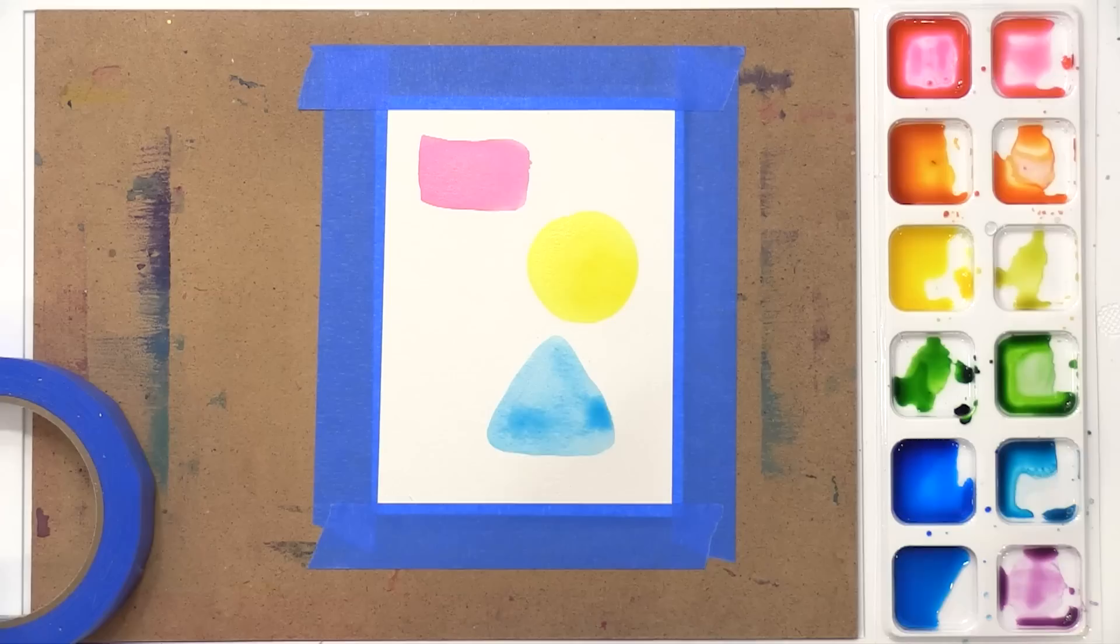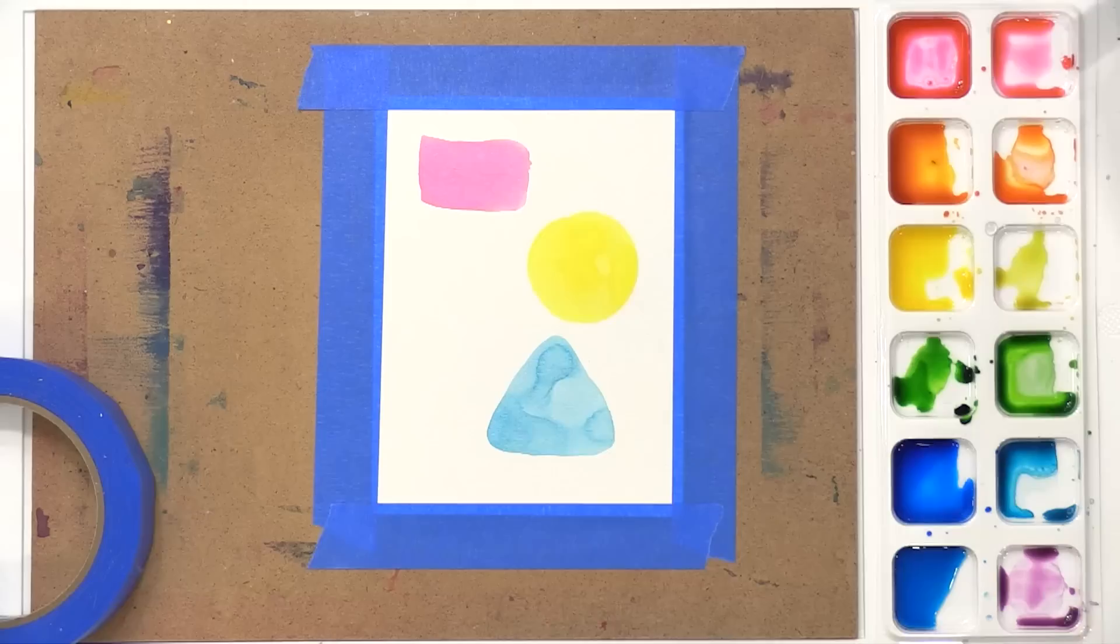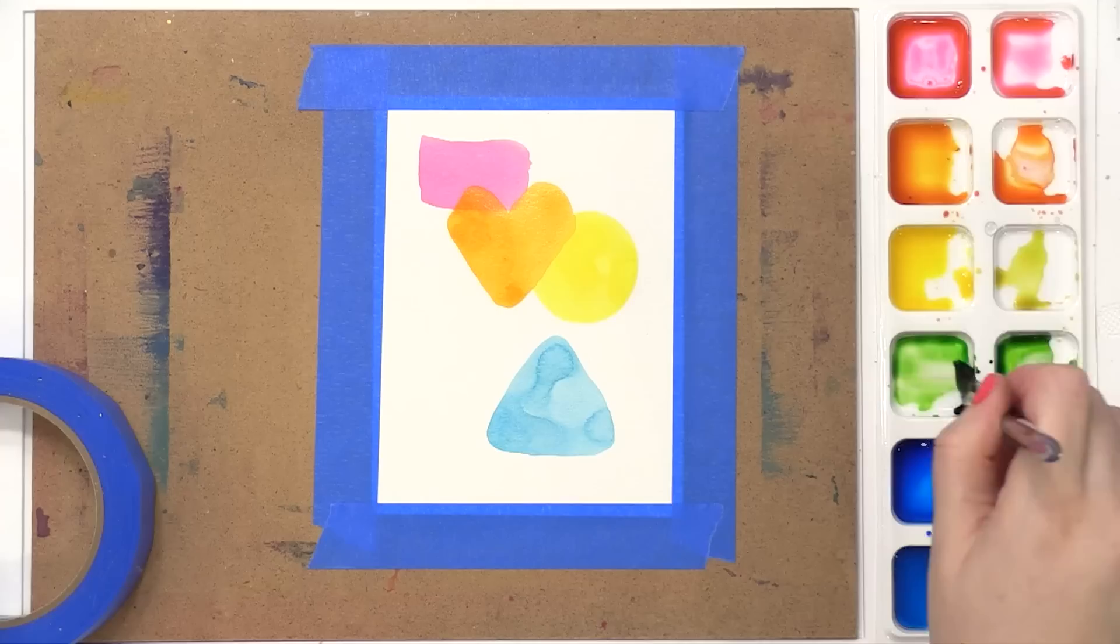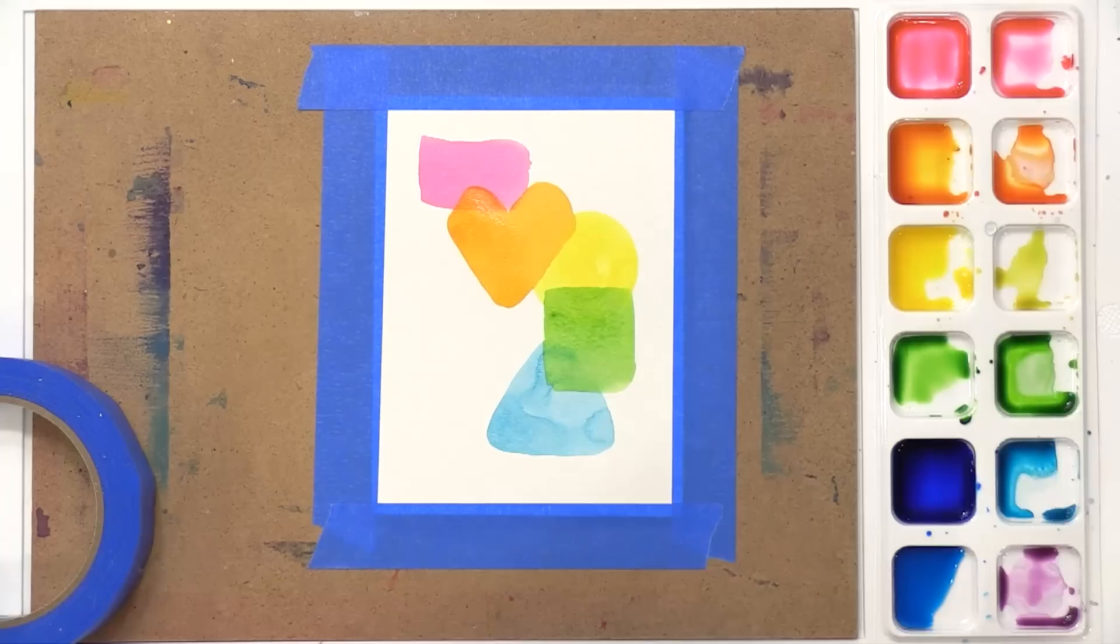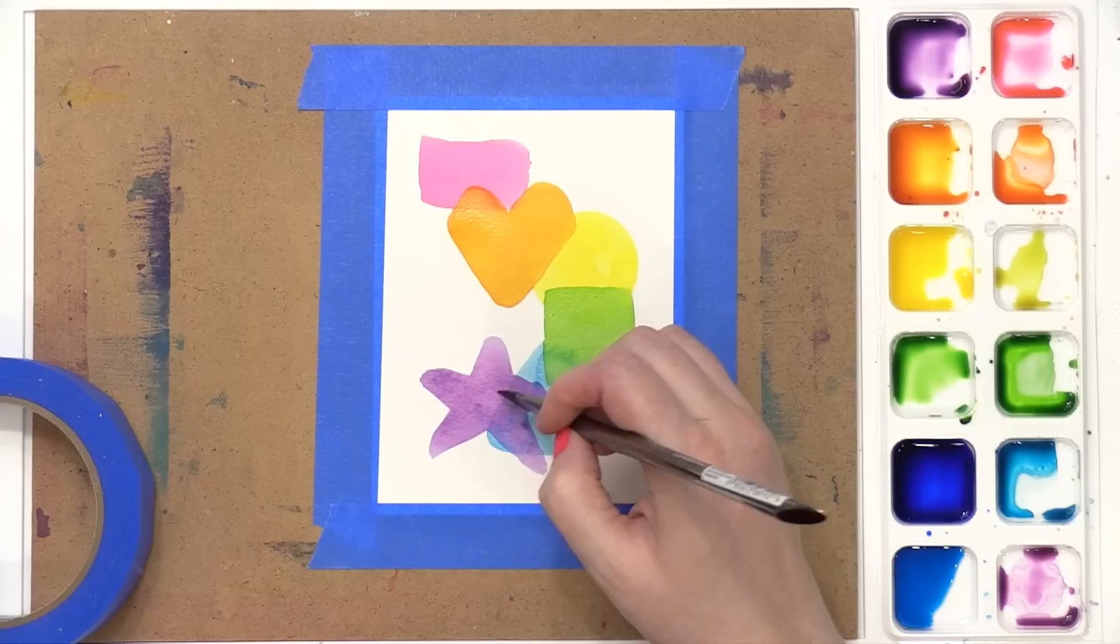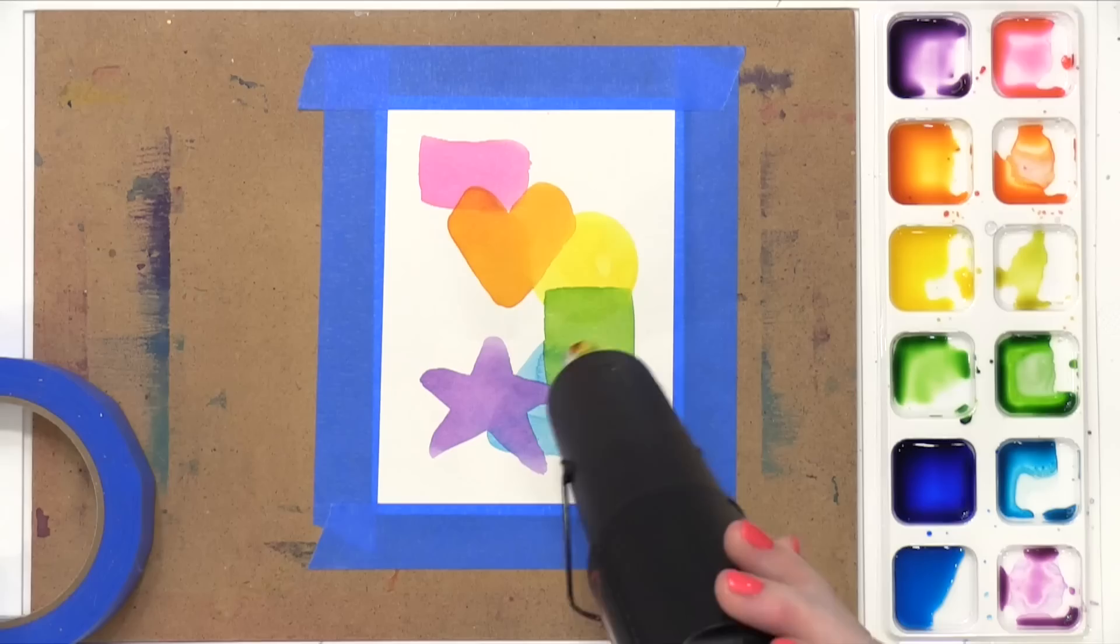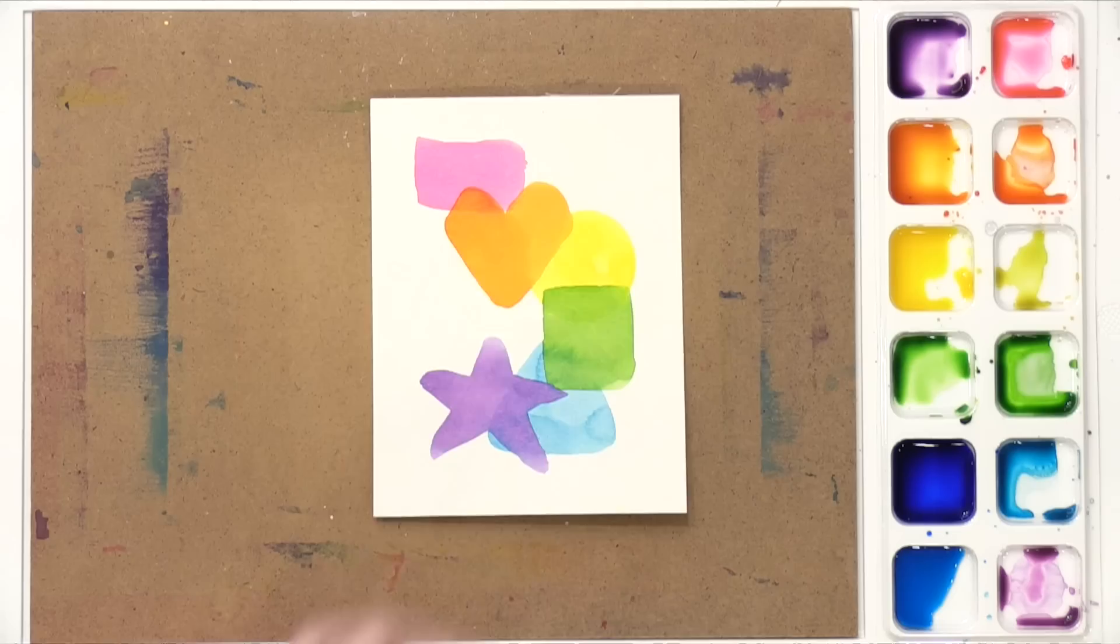I'm now going to take orange and paint a heart that overlaps the red and yellow. I'll take some green and overlap it on the yellow and blue with a green square. And then I had a purple star down at the bottom. So this is a really fun kind of painting that you can do for your backgrounds. Add just a simple sentiment on top, and it's all complete. So those are my backgrounds for today.